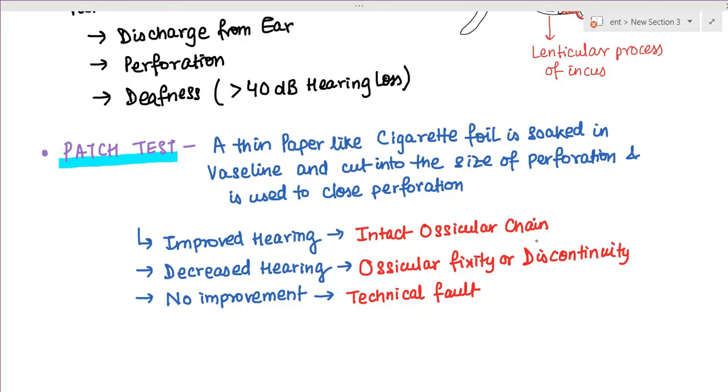If there is improved hearing, we can say there is intact ossicular chain. If there is decreased hearing, we say there is ossicular fixity or discontinuity.